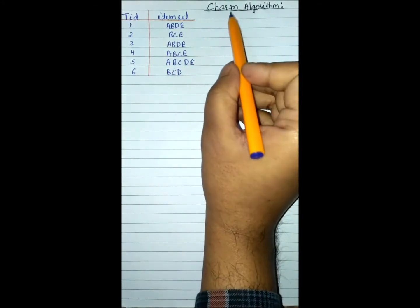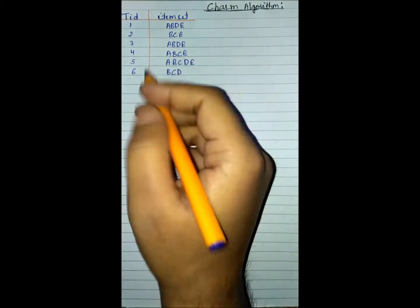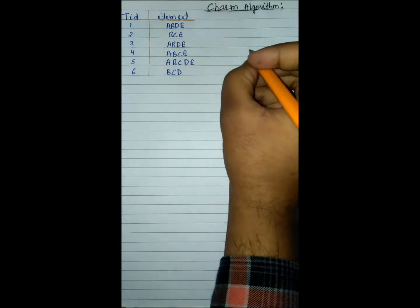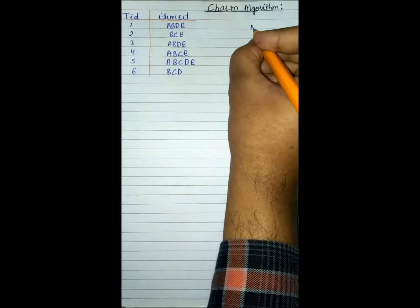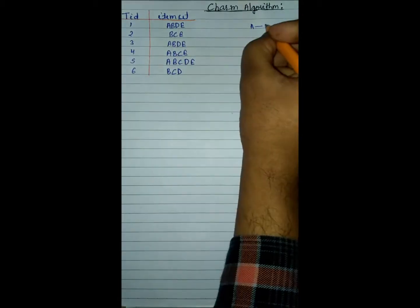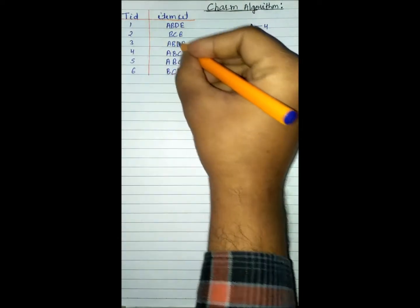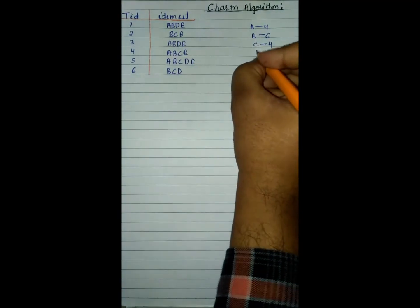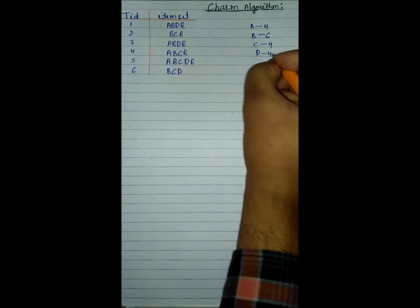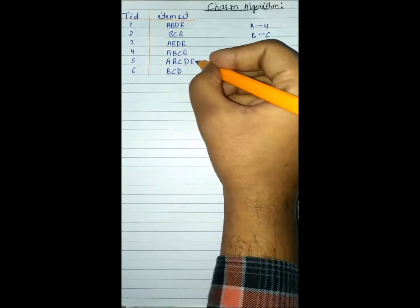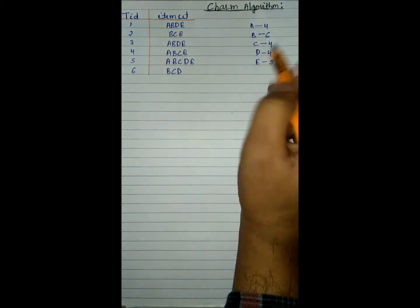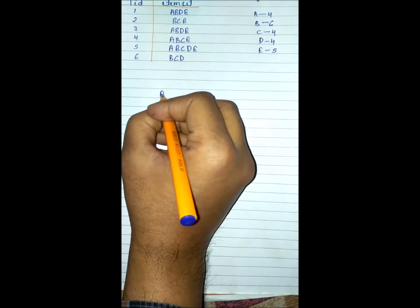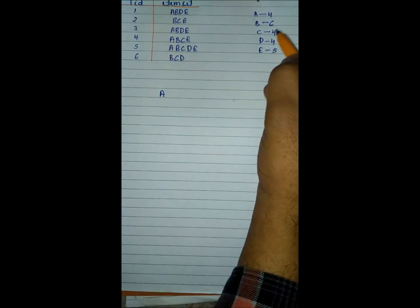This is our database and we use the CHARM algorithm to find closed frequent itemsets. First we write the count of A, B, C, D, and E. A count is four, B count is six, C count is four, D count is five. We write A, B, C, D in increasing alphabetical order: A, then C, then D, then E, then B.